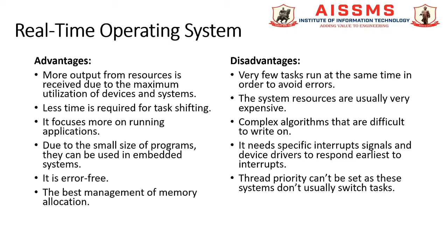Moving to the disadvantages of real-time operating systems: very few tasks run at the same time in order to avoid errors; system resources are usually very expensive; complex algorithms that are difficult to write; it needs specific interrupt signals and device drivers to respond earliest to interrupts; and thread priority cannot be set as these systems do not usually switch tasks.